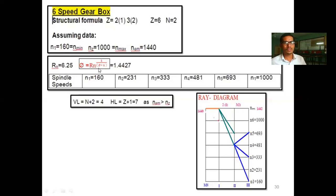Using the law of geometric progression, we calculate the geometric progression ratio phi, whose formula is Rn raised to 1 upon (z minus 1). Here Rn is the range ratio and z is the number of spindle speed steps. Substituting Rn equals 6.25 and z equals 6, we get phi equals 6.25 raised to the power 1/5. Solving this gives phi equal to 1.4427.